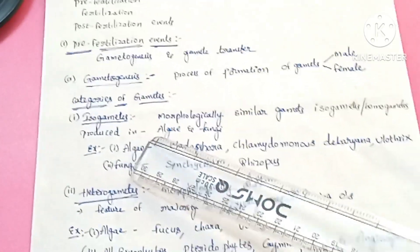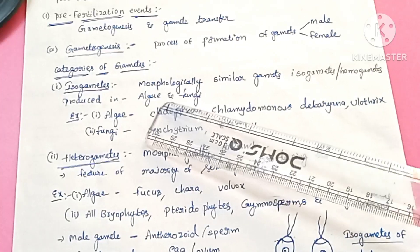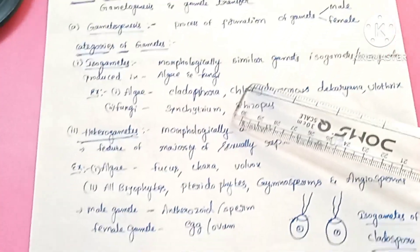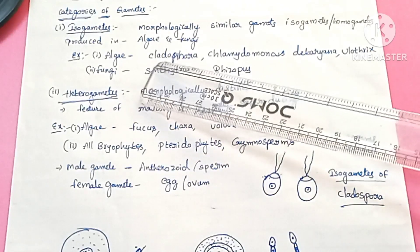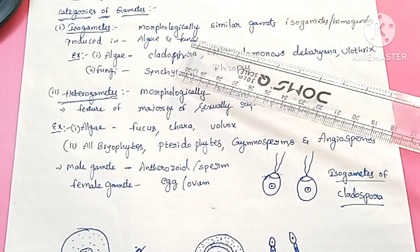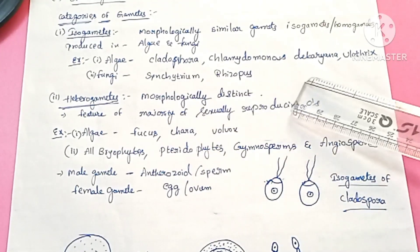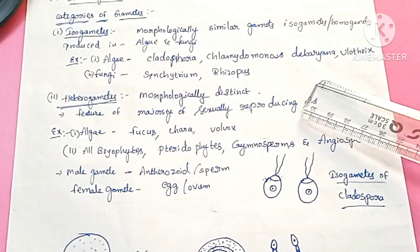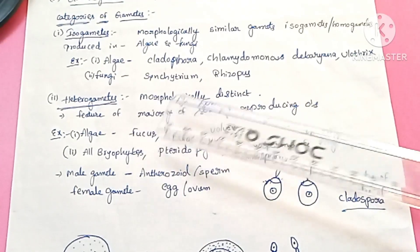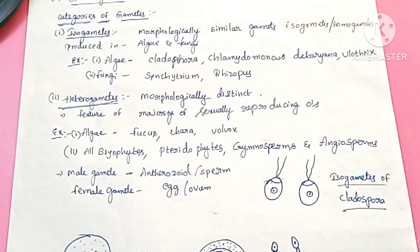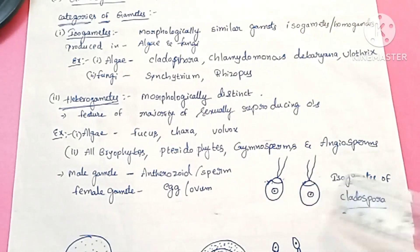There are two types of gametes: isogametes and heterogametes. Isogametes — the name itself indicates 'iso' means same — these are morphologically similar gametes, also called homogametes. Isogametes are produced by algae such as Cladospora, Chlamydomonas, Diatoma, and Ulothrix, and by fungi such as Synchytrium and Rhizopus.